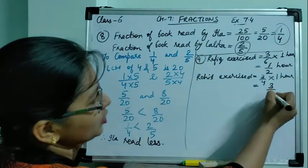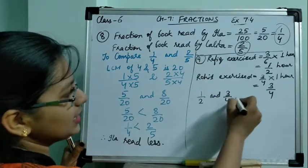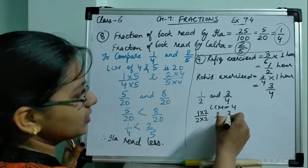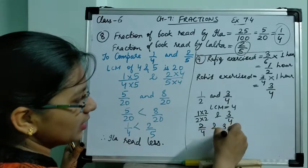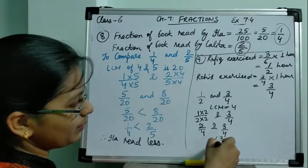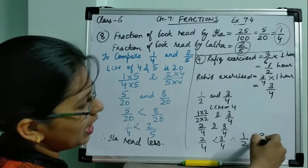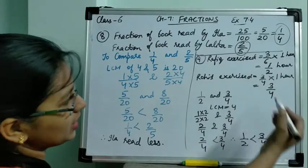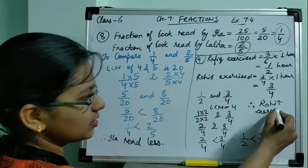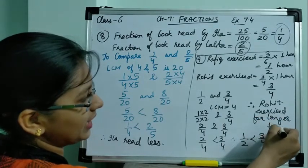Now compare 1 by 2 and 3 by 4. The LCM of 2 and 4 is 4. So 1 by 2 becomes 2 by 4, and 3 by 4 stays as 3 by 4. The question asked who exercised for longer. Since 3 by 4 is greater than 2 by 4, half is less than 3 by 4. Therefore, Rohit exercised for a longer time.